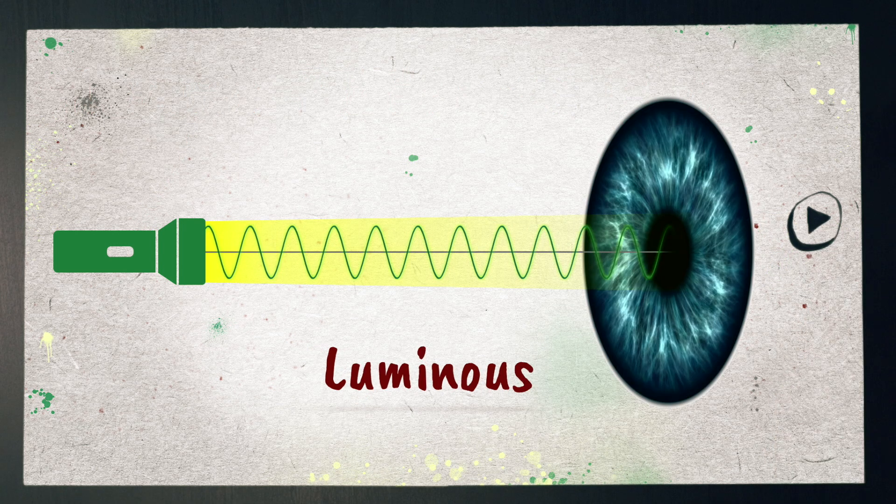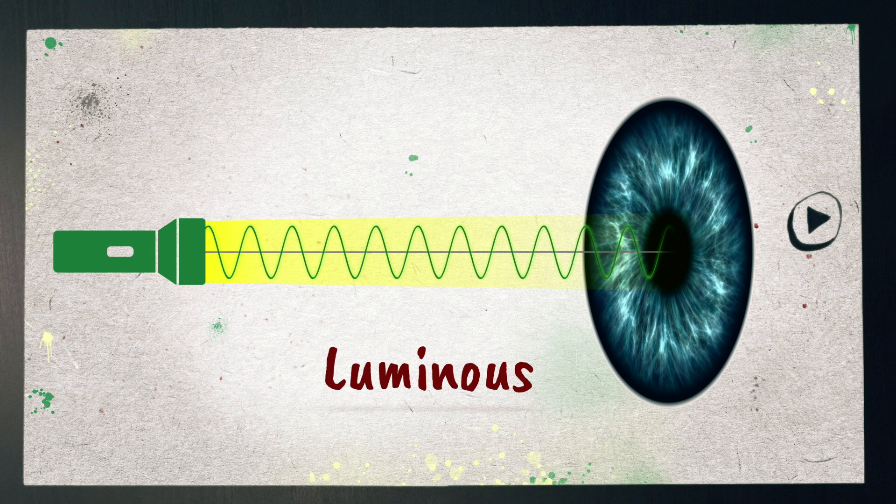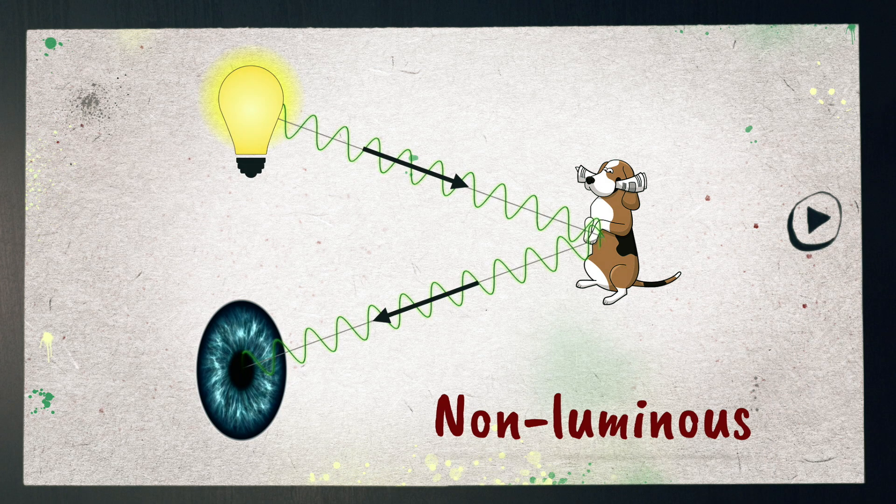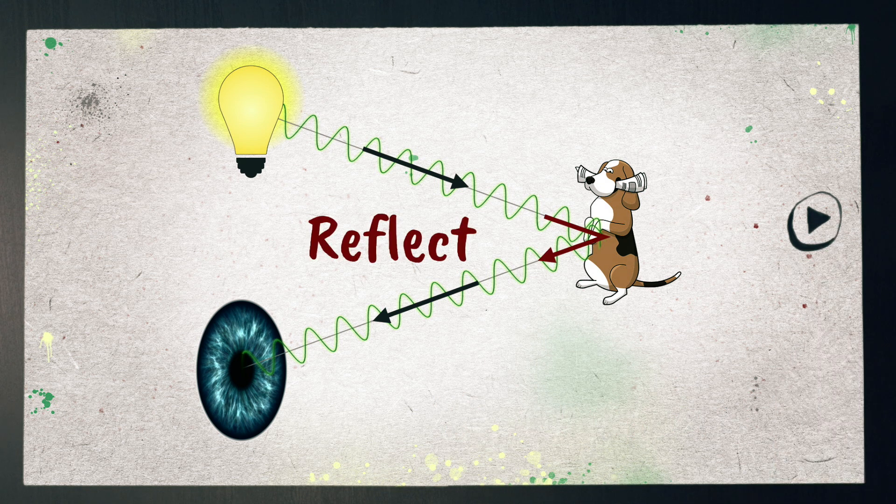Our eyes can only see an object if the light is reaching the eyes from that object, but that doesn't mean everything we see is luminous. Most objects are non-luminous, but we see them because light bounces off the objects. We can say that these objects reflect light.